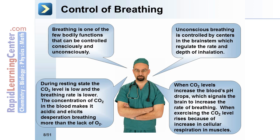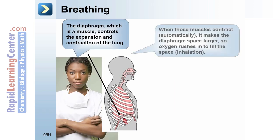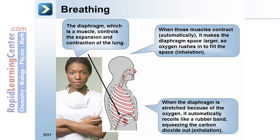The diaphragm, which is a muscle, controls the expansion and contraction of the lungs. When those muscles contract automatically, it makes the diaphragm space larger so oxygen rushes in to fill the space — this is inhalation. When the diaphragm is stretched because of the oxygen, it automatically recoils like a rubber band, squeezing the carbon dioxide out — this is exhalation.